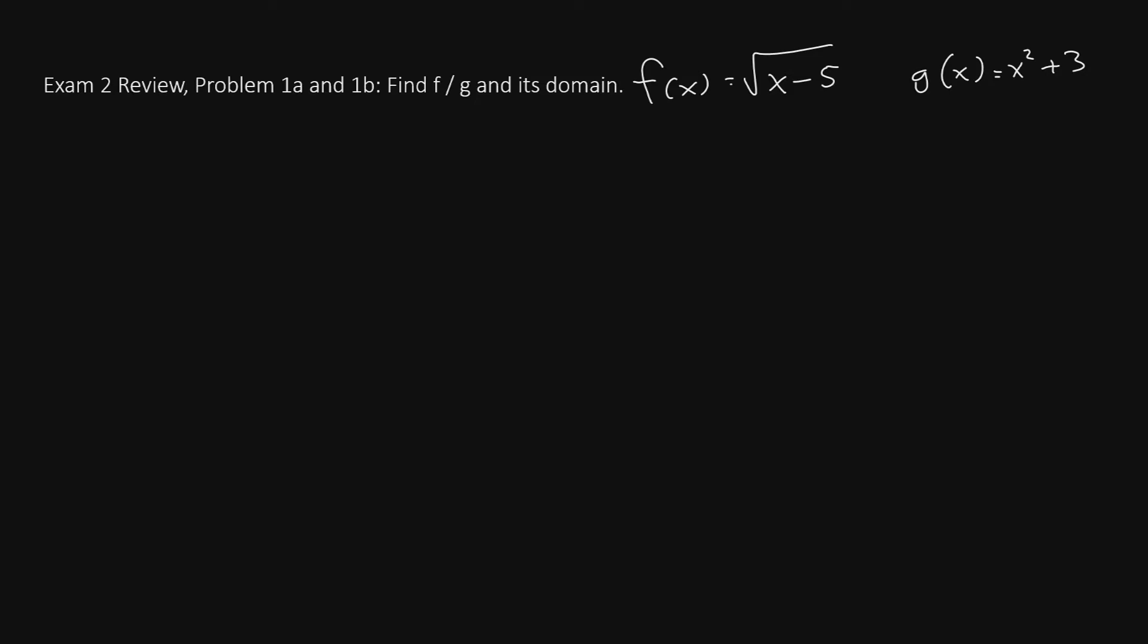This time we'll do problem 1a and 1b where we are asked to find f over g and its domain. Let's begin by writing f divided by g. Now we'll replace f on top with this expression square root of x minus 5 and replace g on the bottom with this expression x squared plus 3. So on the top of this fraction we write square root of x minus 5, on the bottom write x squared plus 3. This will be the function f over g.